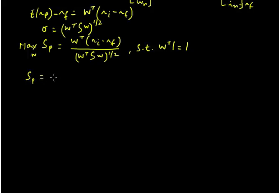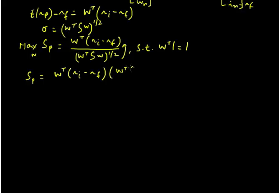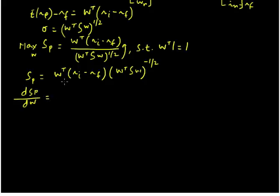Now let us manipulate the Sharpe ratio. The maximization problem in matrix format is: maximize W transpose times (Ri minus Rf), divided by (W transpose times S times W) raised to the power of half. I am going to take the standard deviation onto the numerator so it gets multiplied with a negative power. We have two functions and a product of them, so we will follow the product rule methodology from the previous video.